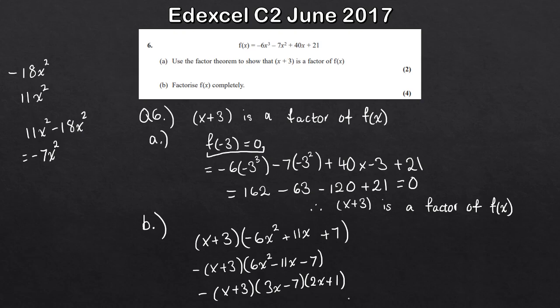Like you can see, these questions are very standard. You'll get one part asking you to use the factor theorem, and then the second part you want to factorise completely. So there we go - that's 6 marks there. Let's take a look at the next question.